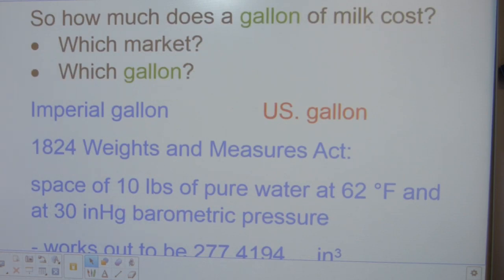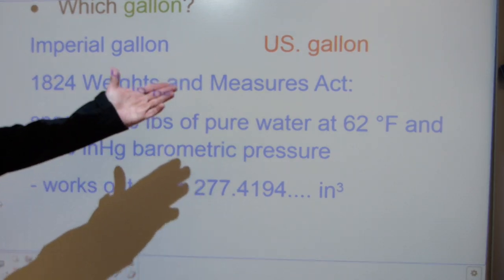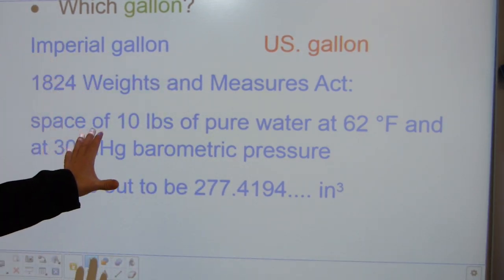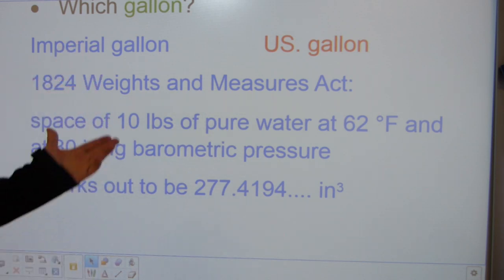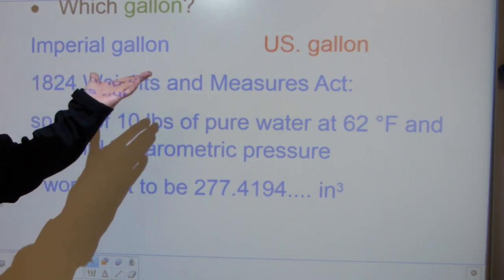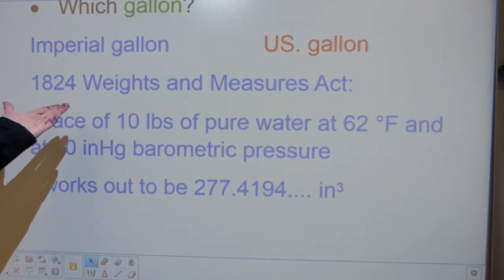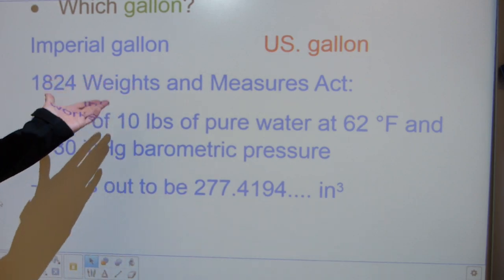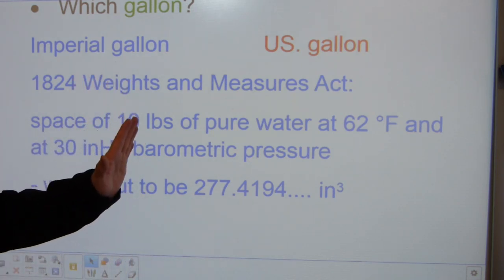The Imperial gallon has a slightly different story. After the American Wars of Independence, the British Empire updated its 1706 Queen Anne's wine gallon, which update the Americans did not follow. In 1824, the British created the Imperial system of measures.